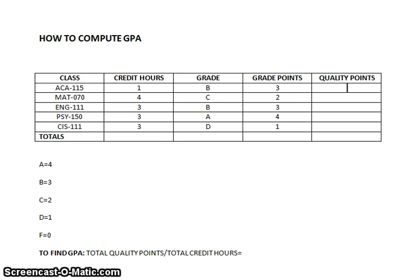Next, to figure your quality points, you simply take your number of credit hours times your grade point received for that grade to get your quality point for that class. So a one credit hour class at three points — one times three would be three. A four hour class times two would give you eight. A three credit hour class times three points would give you nine. Three credit hours for Cite 150 times four for that A would give you twelve. And finally the three hour CIS 111 times one point would give you three.